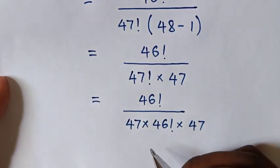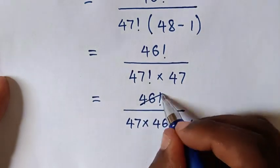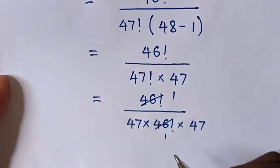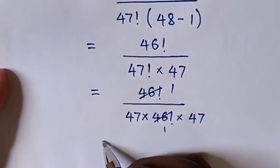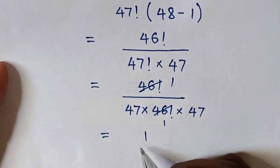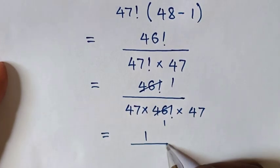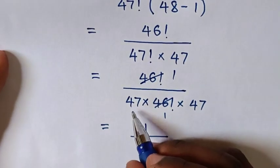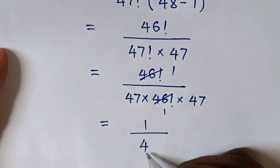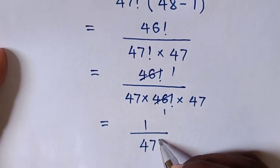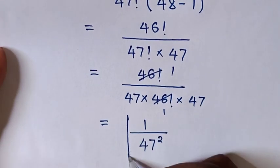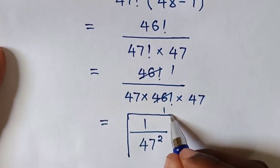Then to simplify, this 46 factorial cancels out. So this is equal to 1 over this times this, which is 47 squared. So this is our final answer.